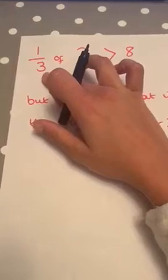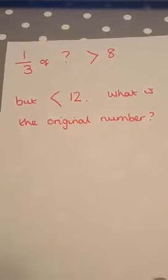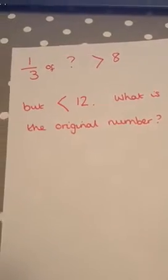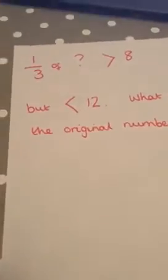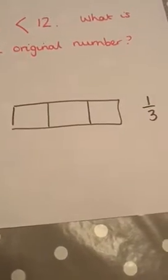So in our bar model this time, we're going to be looking at 3s. Let's have a look at this problem. One third of a number is bigger than 8, so I'm going to draw my bar model again. You all know I love a bar model. So here it is, split equally into thirds, one whole one split into three equal sections.